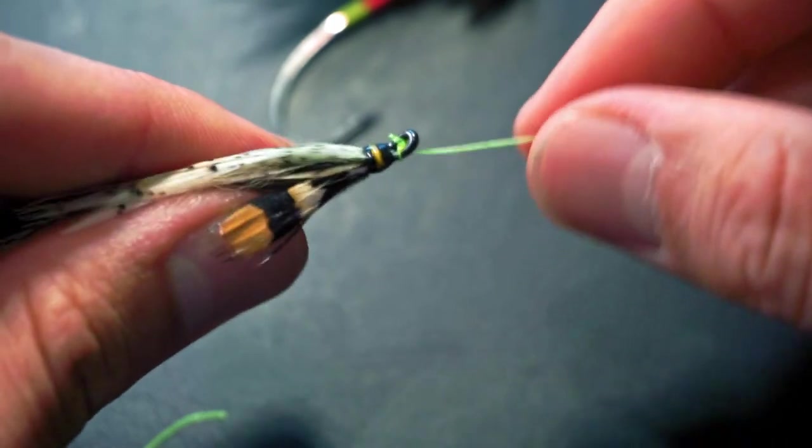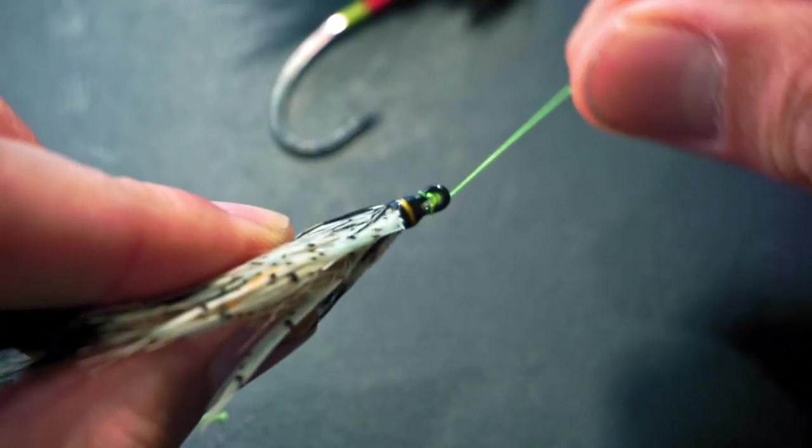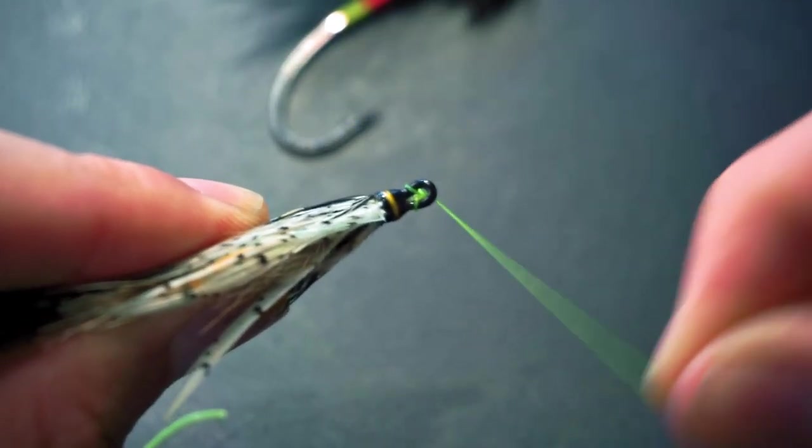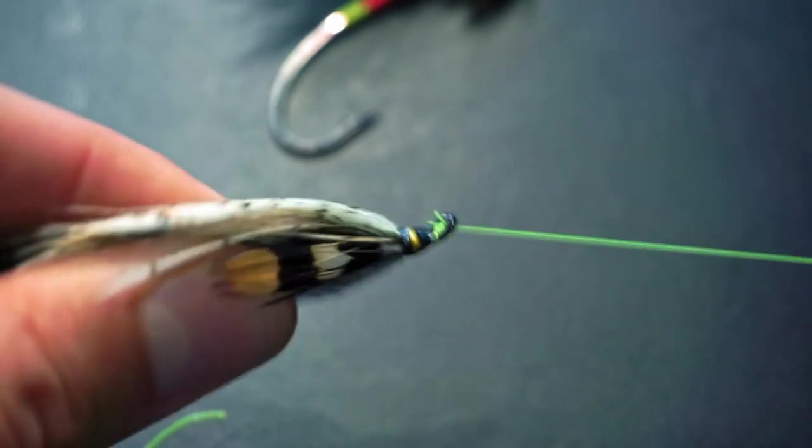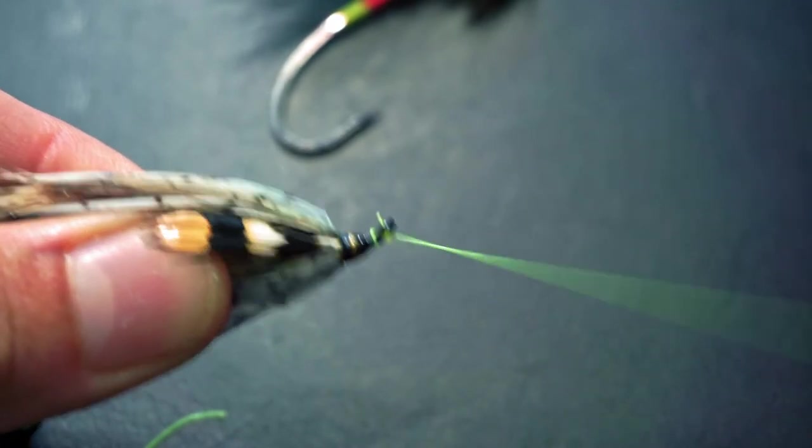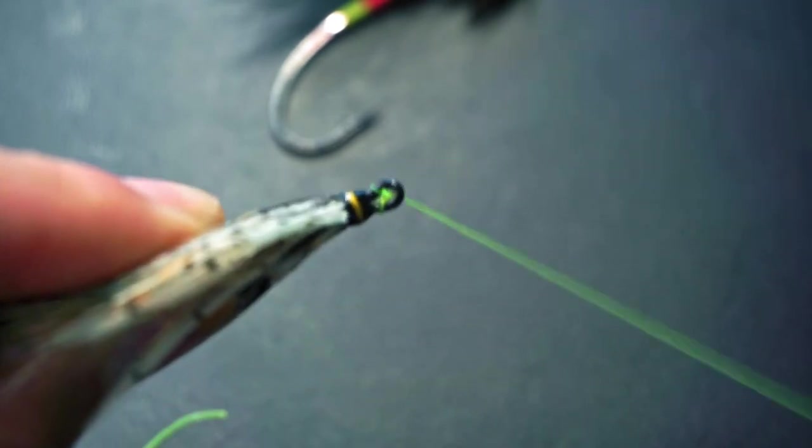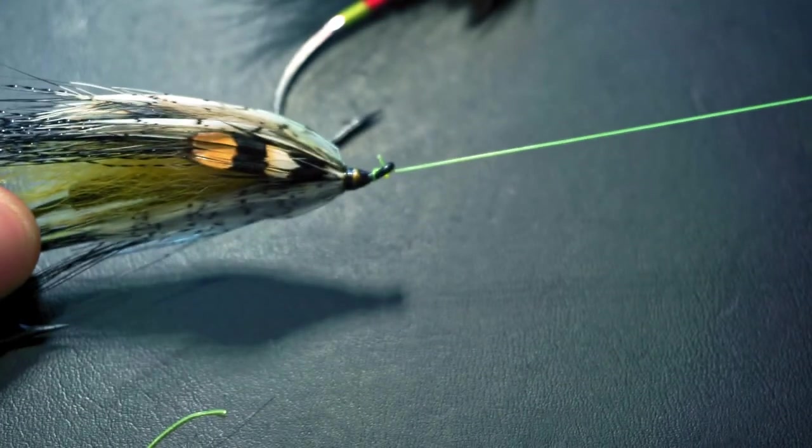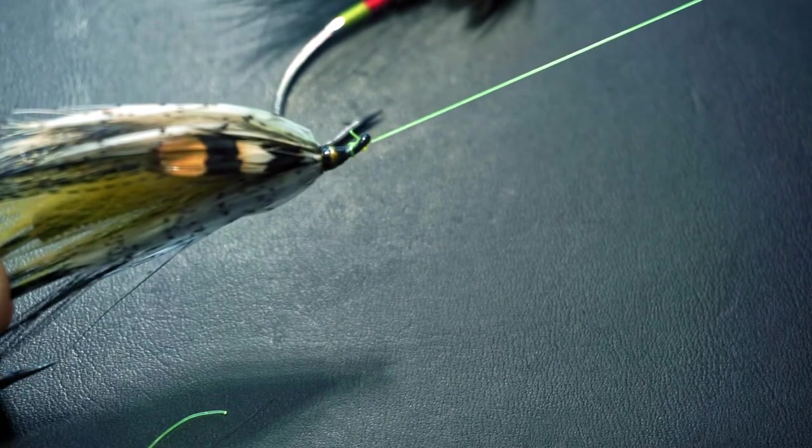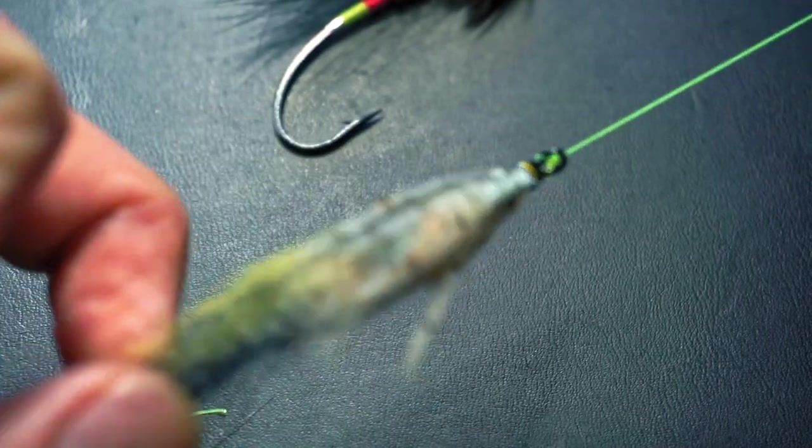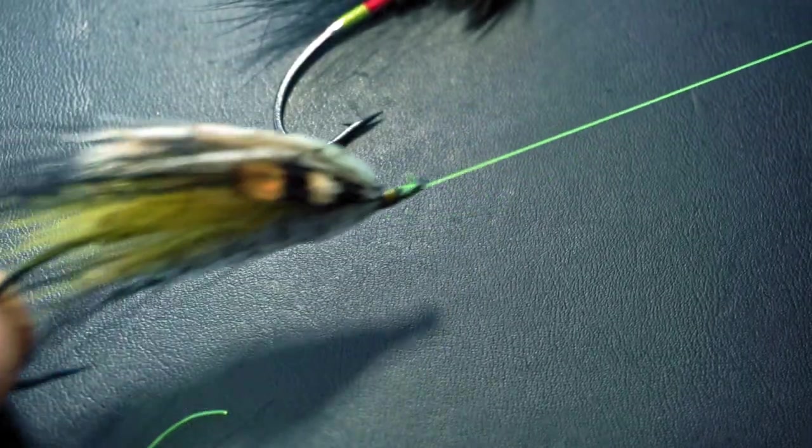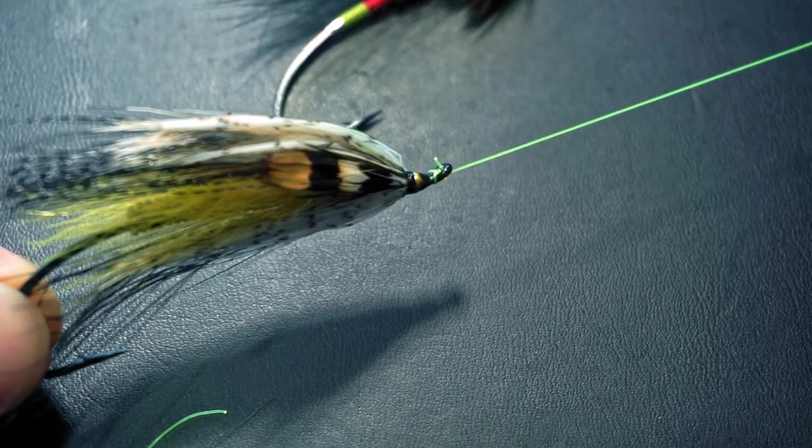When you try to do the same thing with the turtle knot, however, the knot remains in place. Only the leader moves, but the knot itself is always in position. Not to mention it comes in a straight line with the shank of the hook, which is much more secure in my opinion.